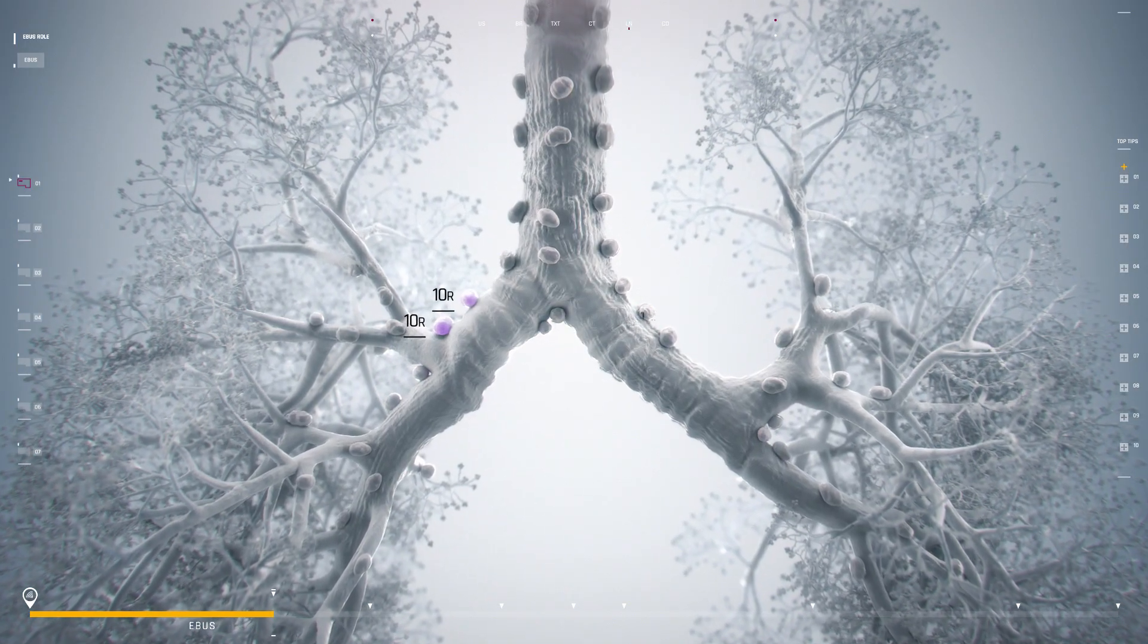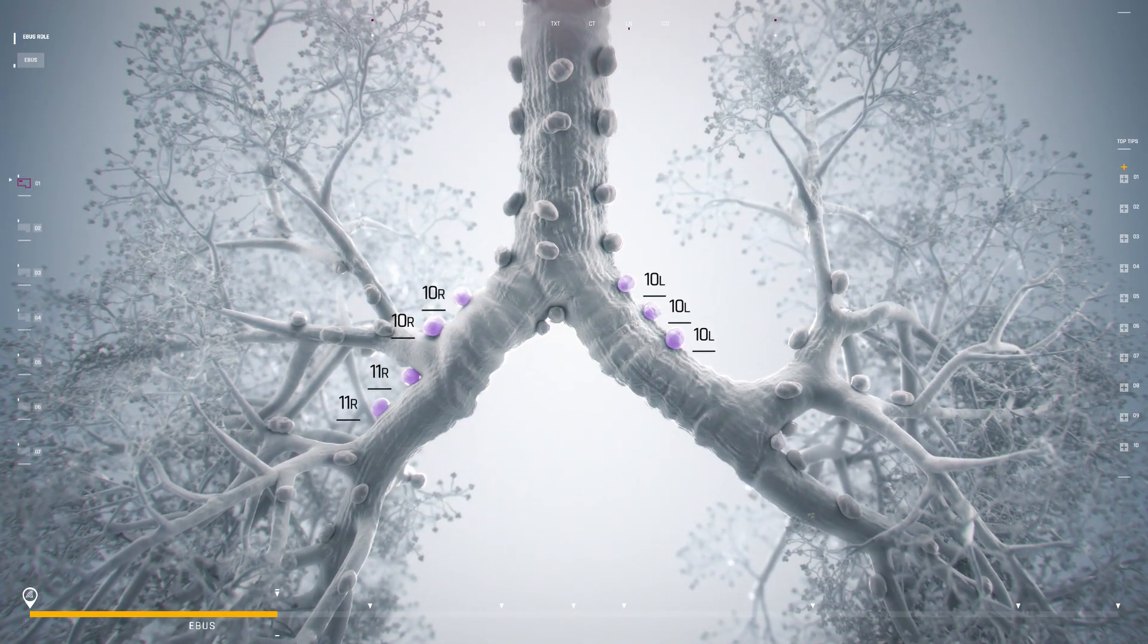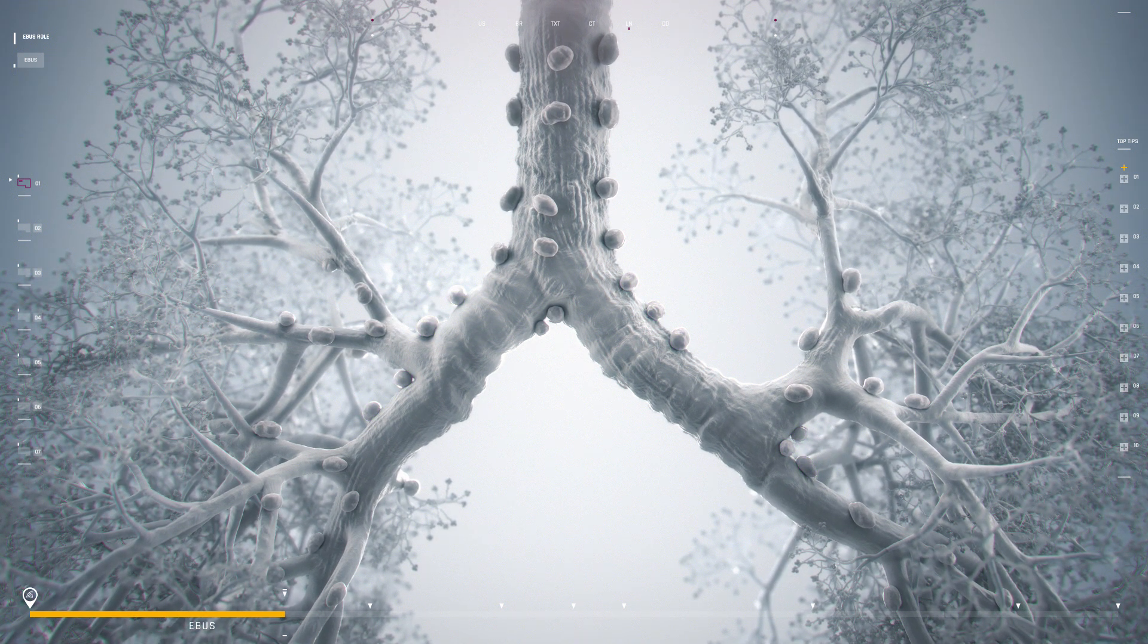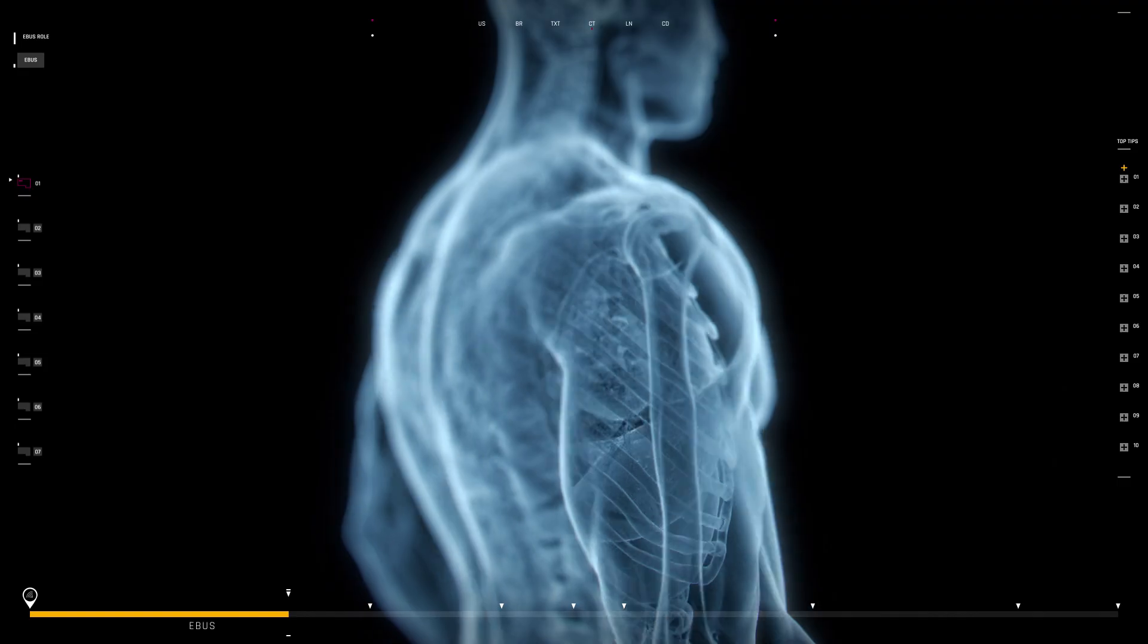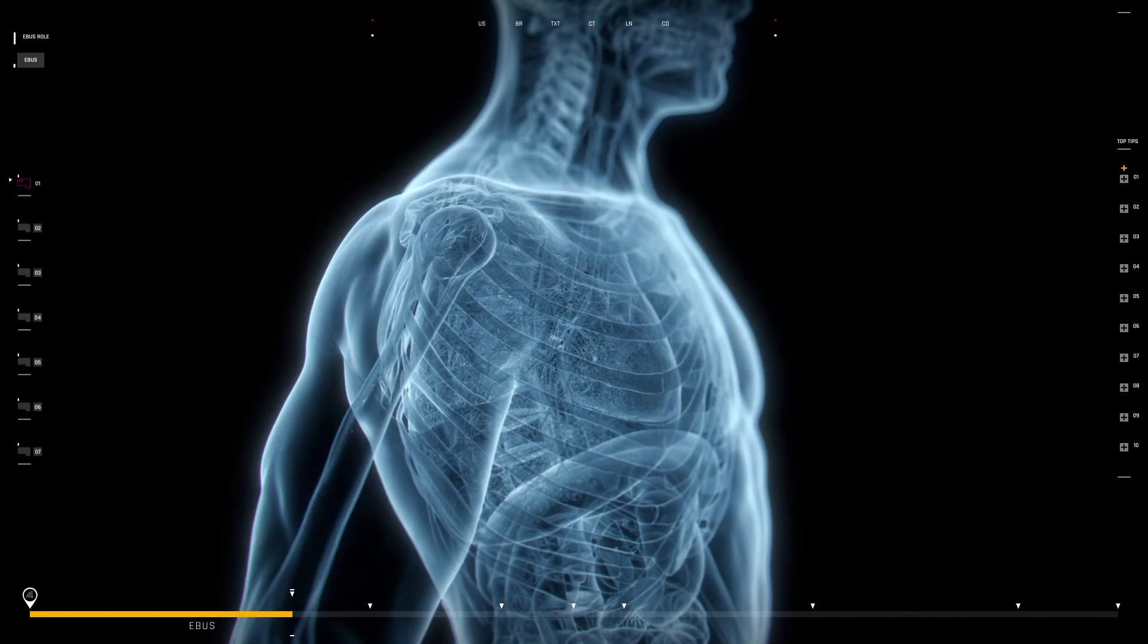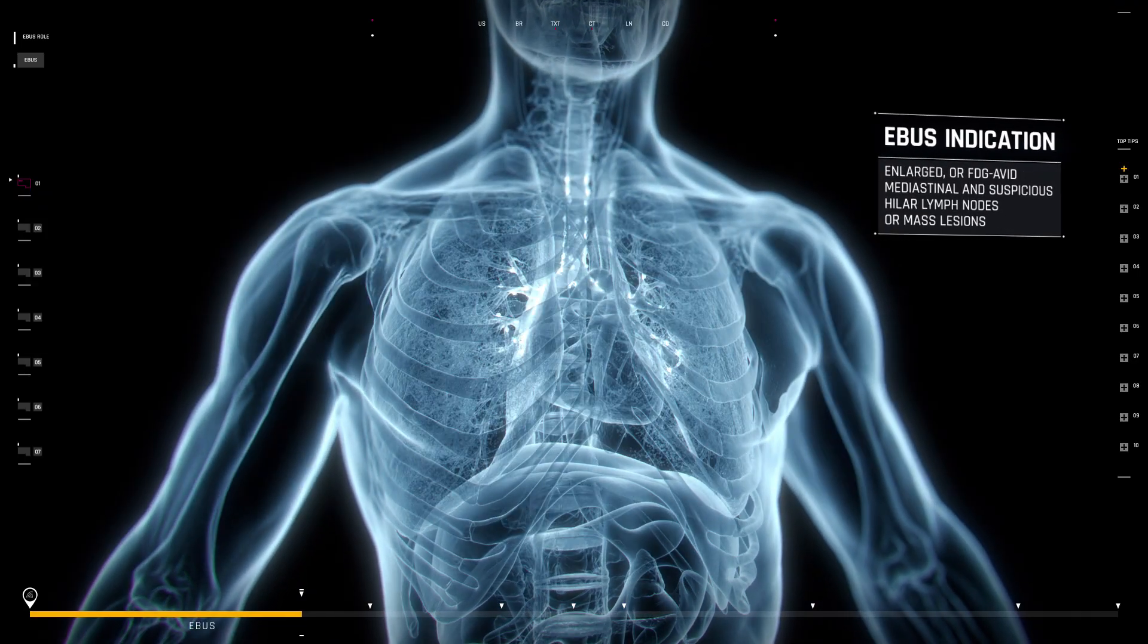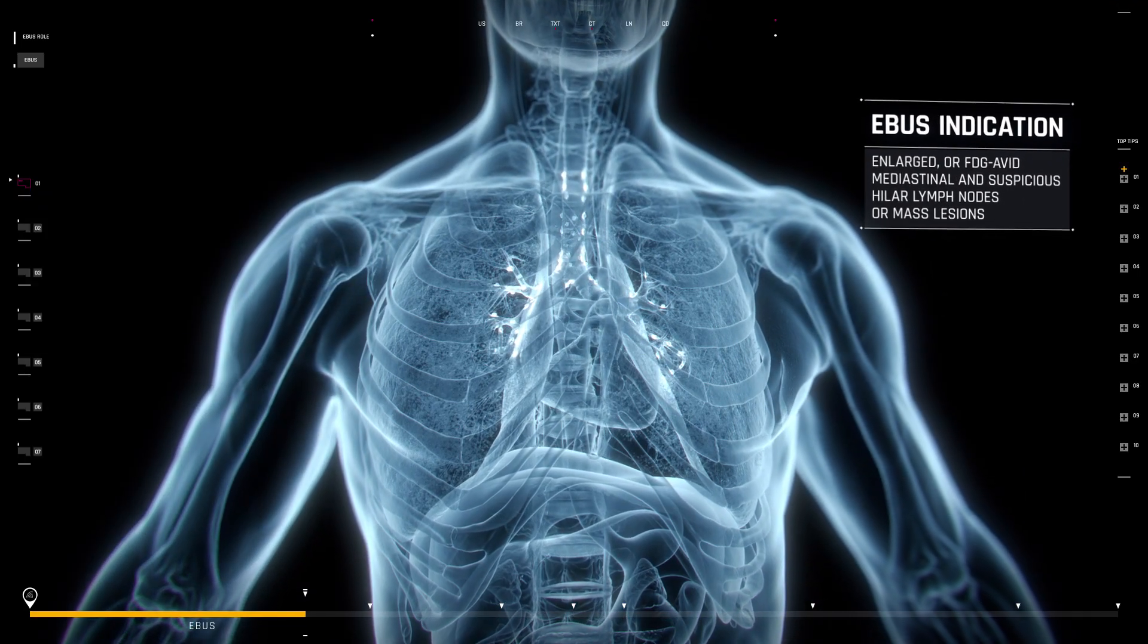EBUS is indicated when initial CT or PET-CT scans display enlarged or FDG-avid mediastinal and hilar lymph nodes, or when mass lesions warrant pathological evaluation.